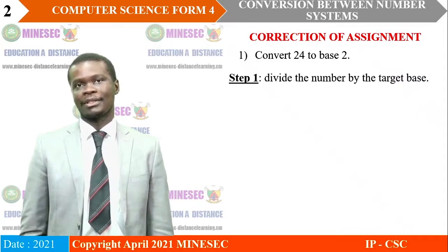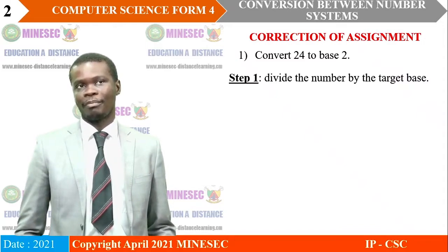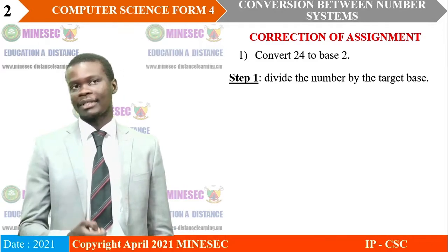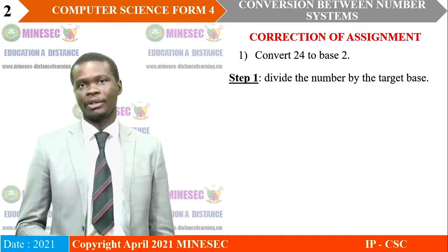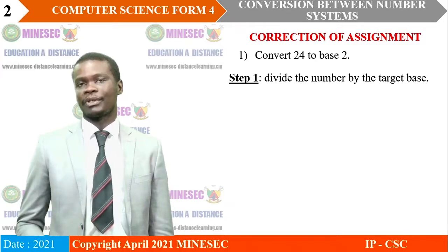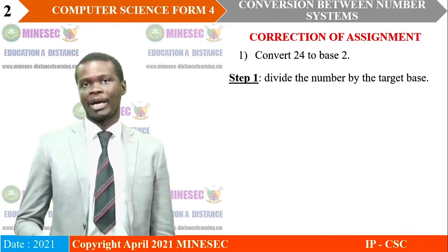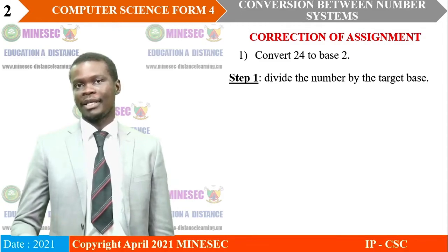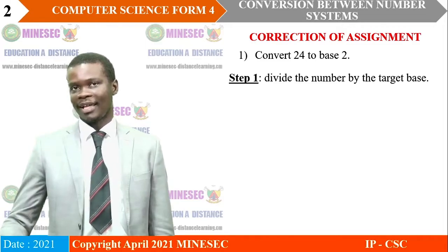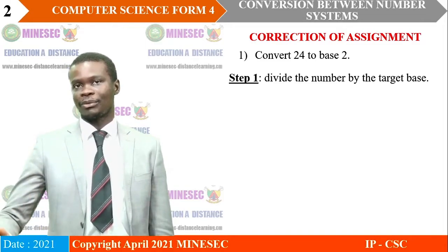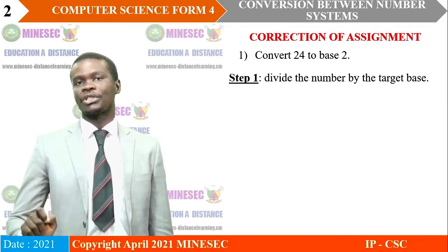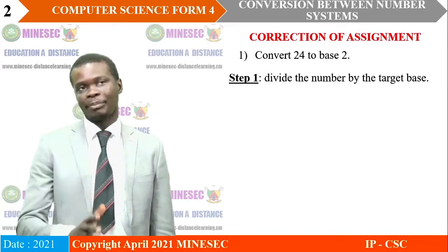In the previous lesson, we learned how to convert from base 10 to base 2, 8, and 16. The assignment was to convert 24 to base 2. We saw two methods to convert. In the first method, we divide the number by the base, then divide the quotient by the base, and keep on dividing until the quotient is 0. So let's apply the first step.